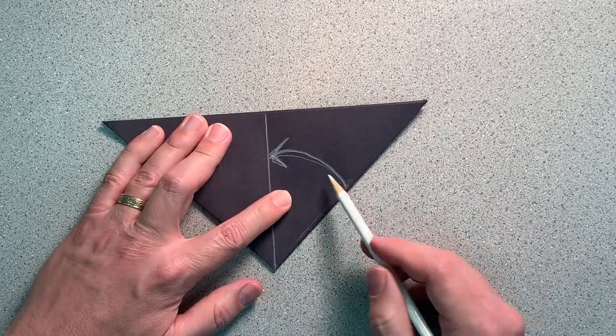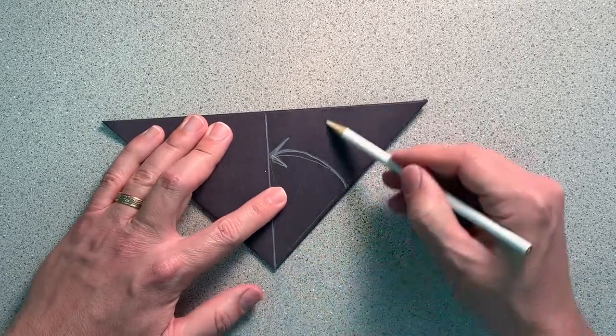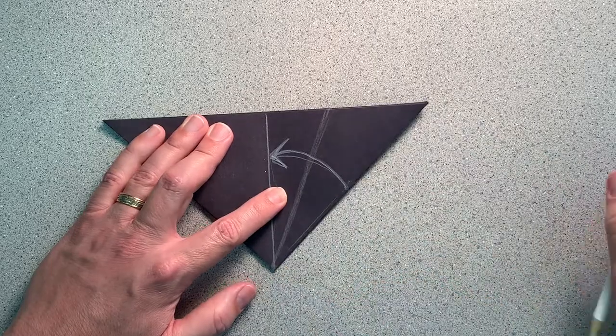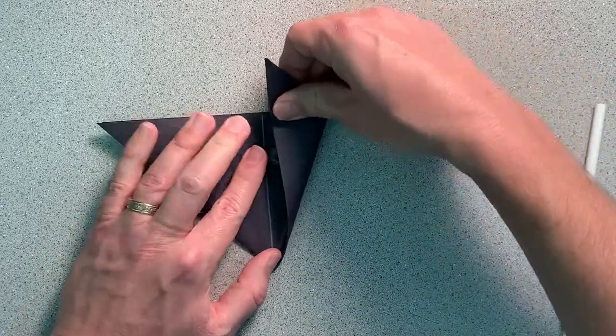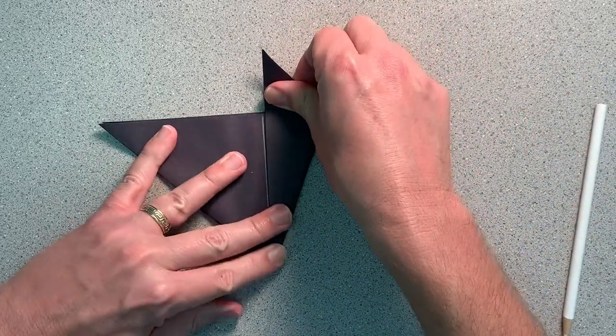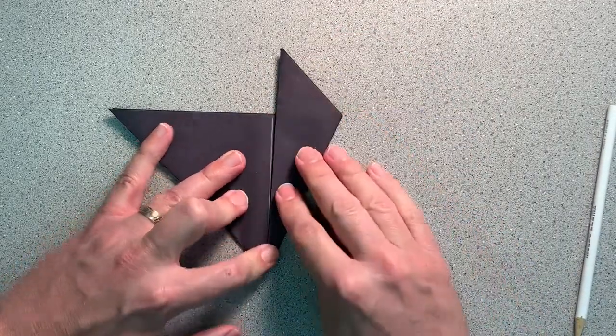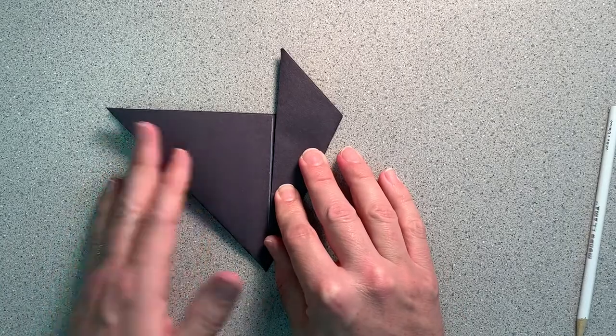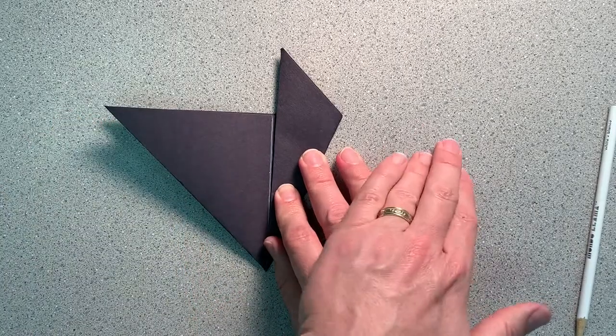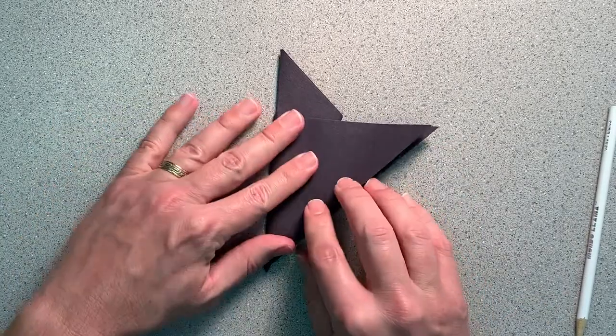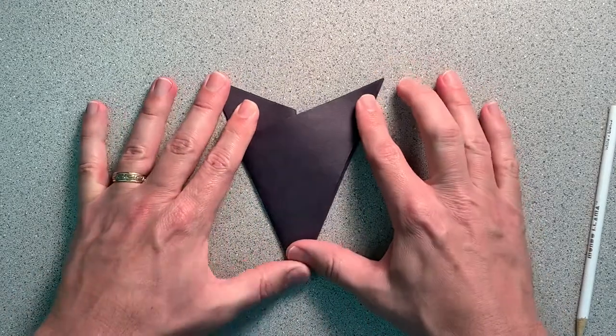We're going to fold this side to the center, basically folding this part in half. So fold it up like this on the line. See, we took this edge and brought it to here. Then I'm going to take this triangle shape and fold it over here. So you end up with this shape.